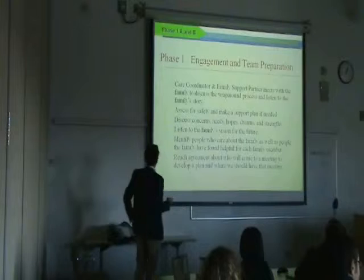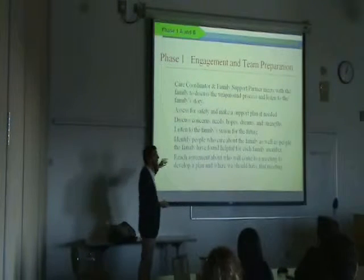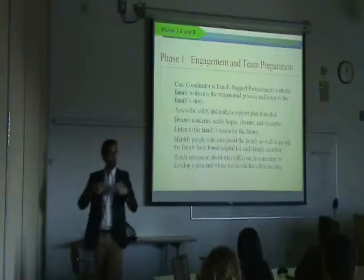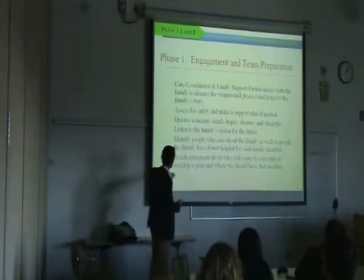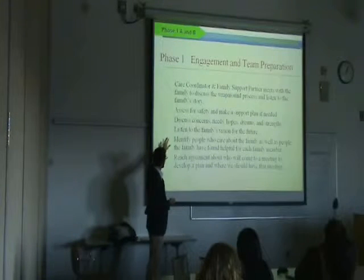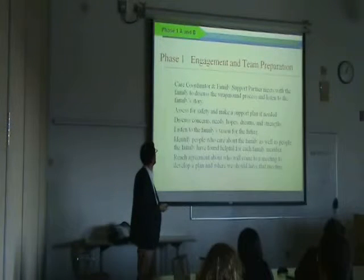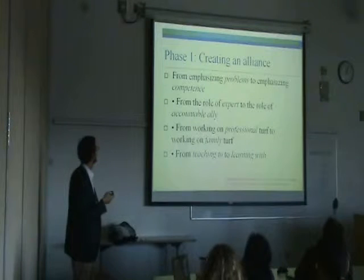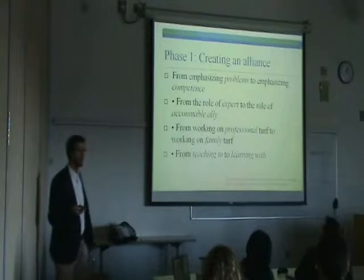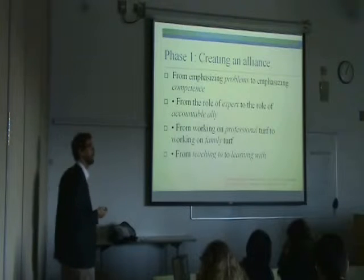Beyond that, we're really talking about this engagement process: discussing concerns, needs, hopes, dreams, and strengths — being very positively oriented, reinforcing successes they have achieved, finding small ways to get little victories right away so that self-efficacy can start to be built back up for the caregiver and the family. Listen to the family's vision for the future, identify people who care about the family and people they have found helpful, and reach an agreement about who's going to come to that first team meeting. You're creating this alliance, moving from emphasizing problems to competence wherever possible.